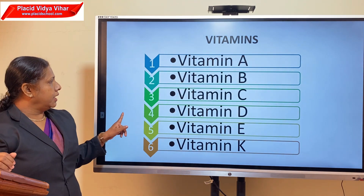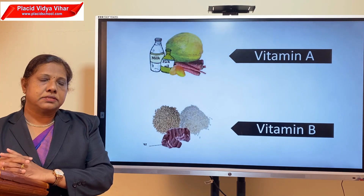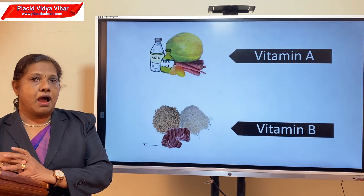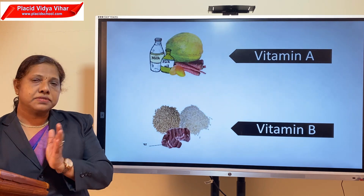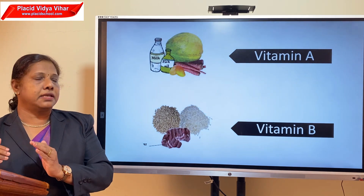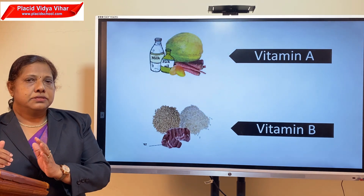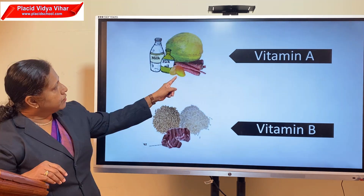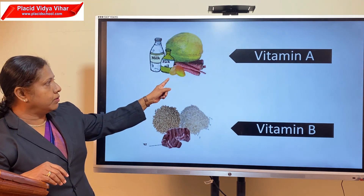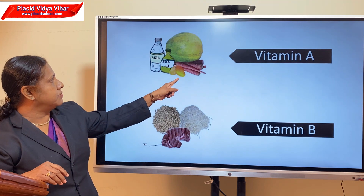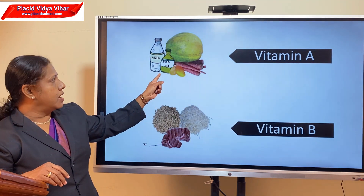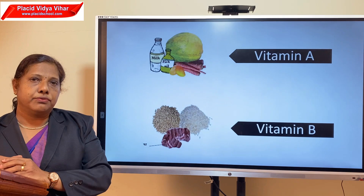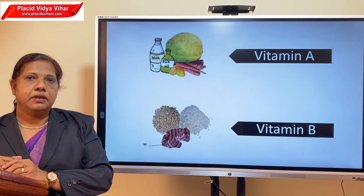Vitamin A is needed for the health of the eyes and skin — it keeps our skin and eyes healthy. Fruits like papaya and mango, and vegetables like carrots, and also milk and fish liver oil, are the sources of vitamin A.